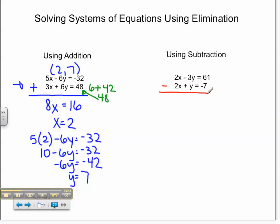Negative 3y minus y is negative 4y, and 61 minus negative 7 is 68. When I divide both sides by negative 4, I get a negative 17 for y.